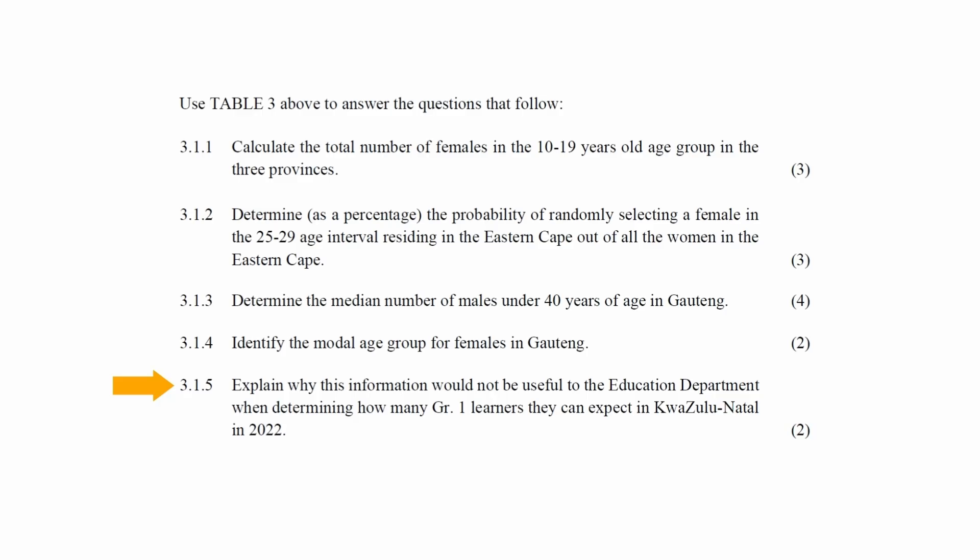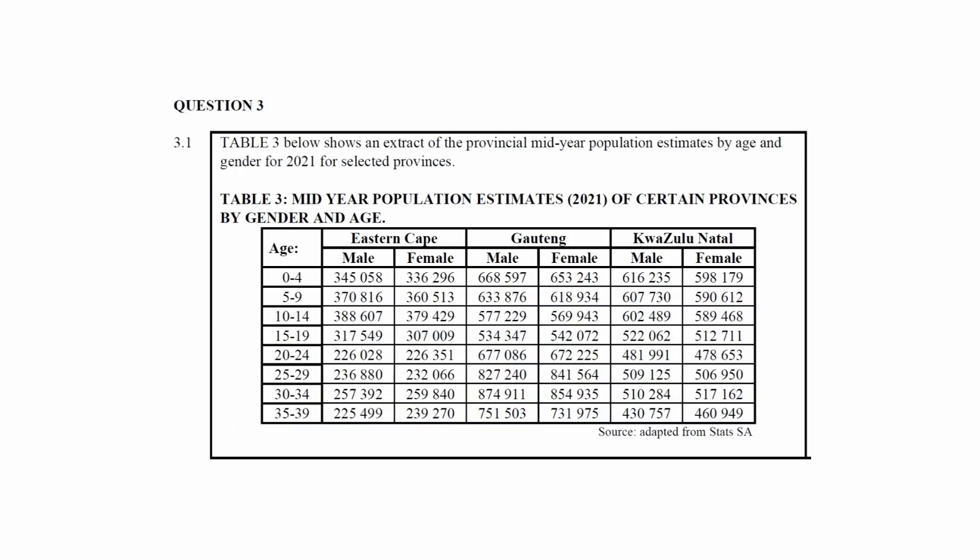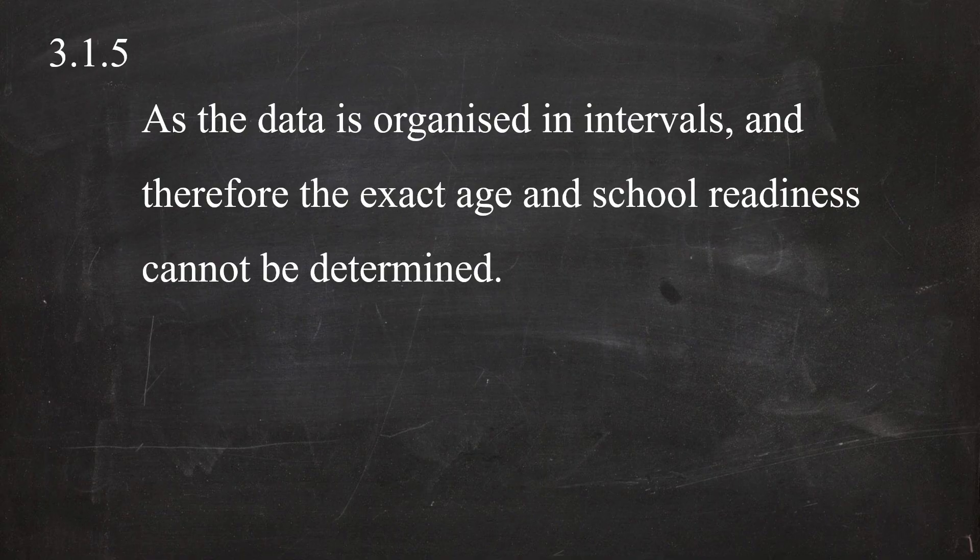In question 3.1.5, you have to explain why this information would not be useful to the education department when determining how many Grade 1 learners they can expect in KwaZulu-Natal in 2022. The answer is that the data is organized in intervals, and therefore the exact age or school readiness cannot be determined.